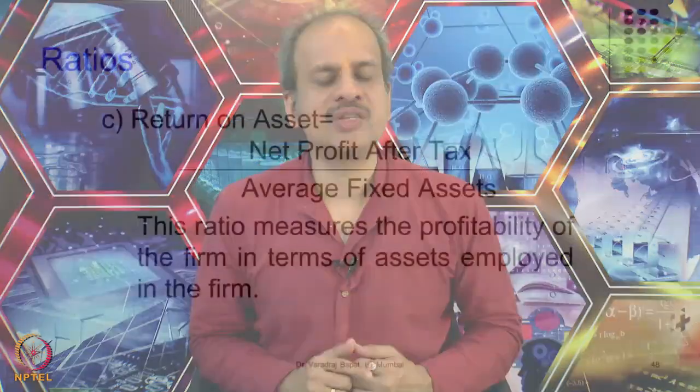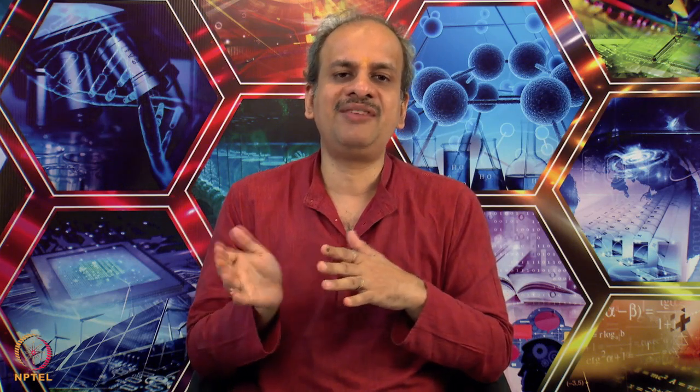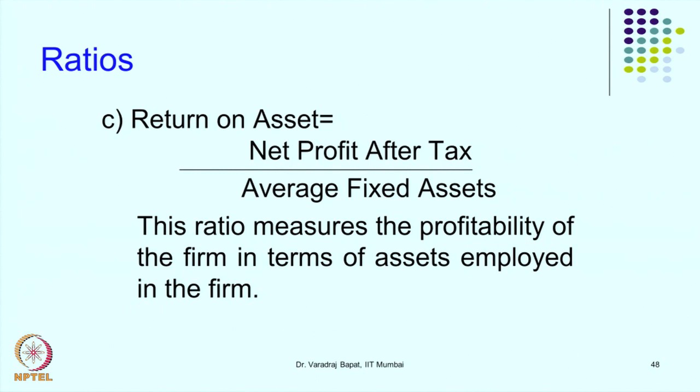The next return ratio is return on assets. Here we use a particular asset in the denominator and find out the profit generated by that asset. Net profit after tax — which need not be the net profit of the whole company but can be the profit from a particular plant or activity — is divided by average fixed assets. Using average figures is an improvement over year-end figures, since the profit is calculated for the whole year. You can also use average total assets if you want to know the return on total assets.